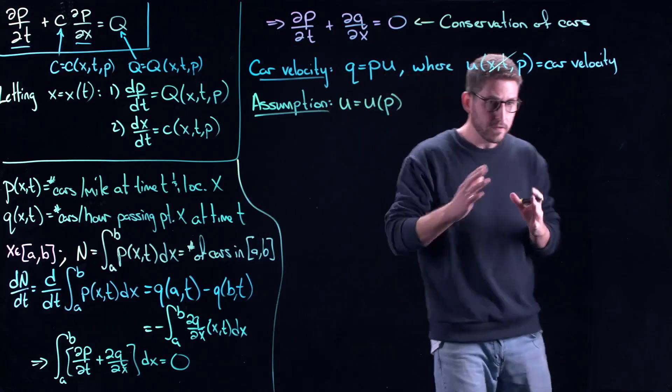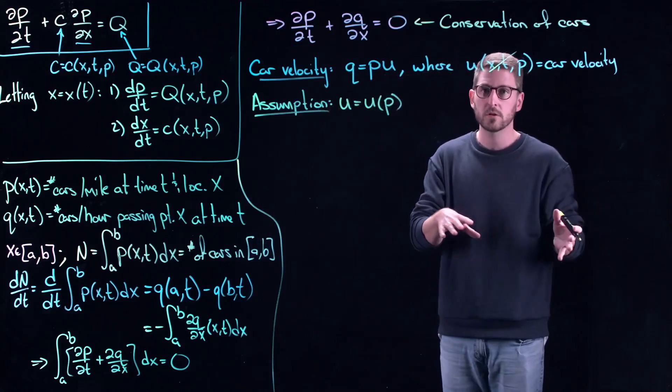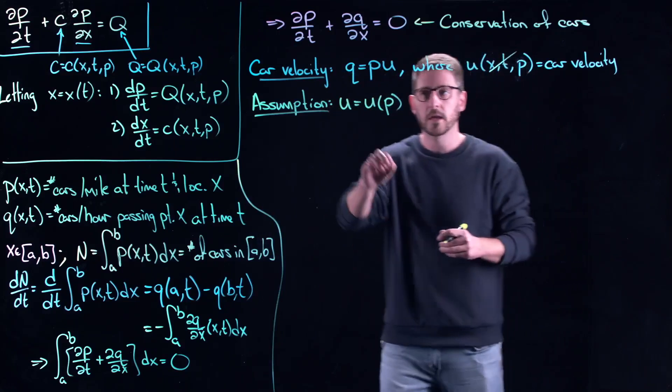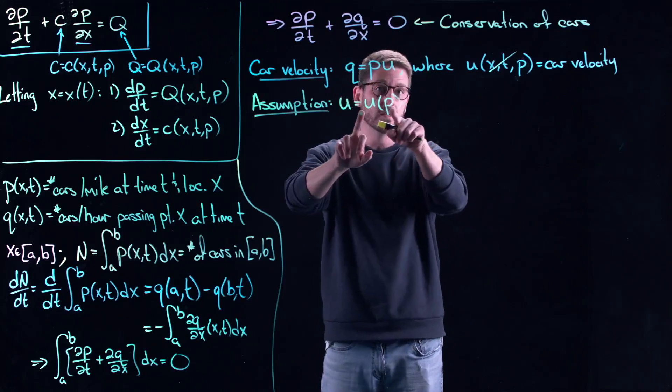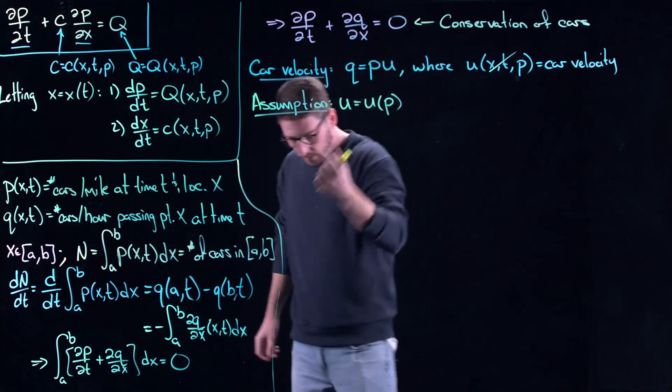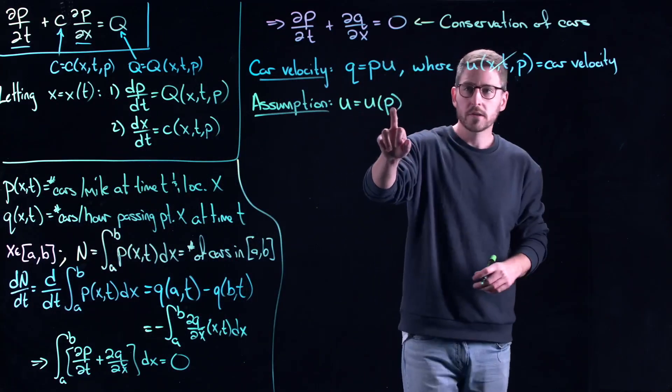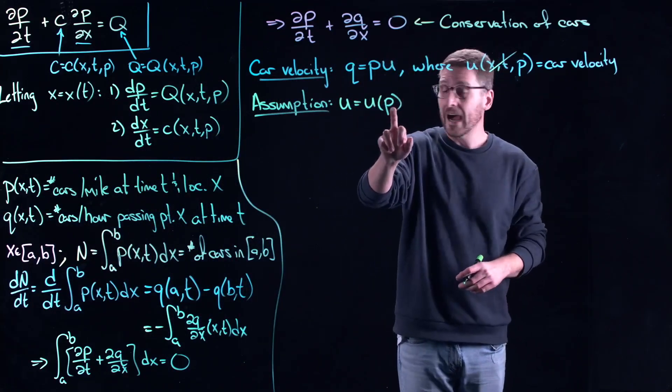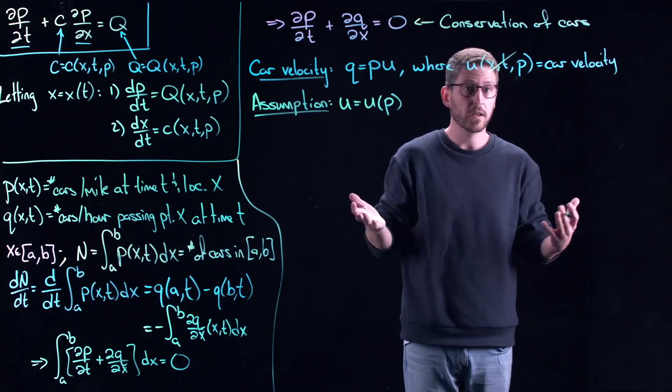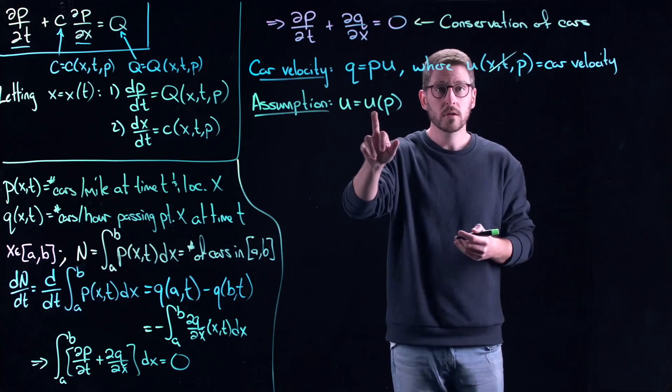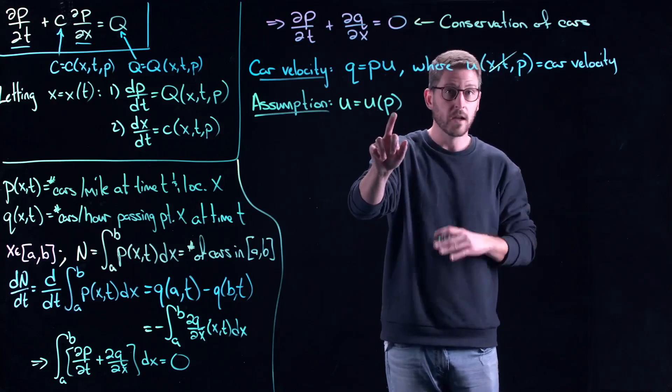And this is a fair assumption. So if you have a nice paved highway, properly done, no potholes, no problems in it, no emergency crew that's sort of taking up a lane for example. In this case, this tells you that your car velocity only depends on the density. And you can imagine how this works. For example, if there is a high density of cars, everybody's probably moving pretty slowly. Lots of people on the highway, bumper to bumper traffic. However, if there's no one on the highway, you can just fly down at the speed limit and not have to worry.